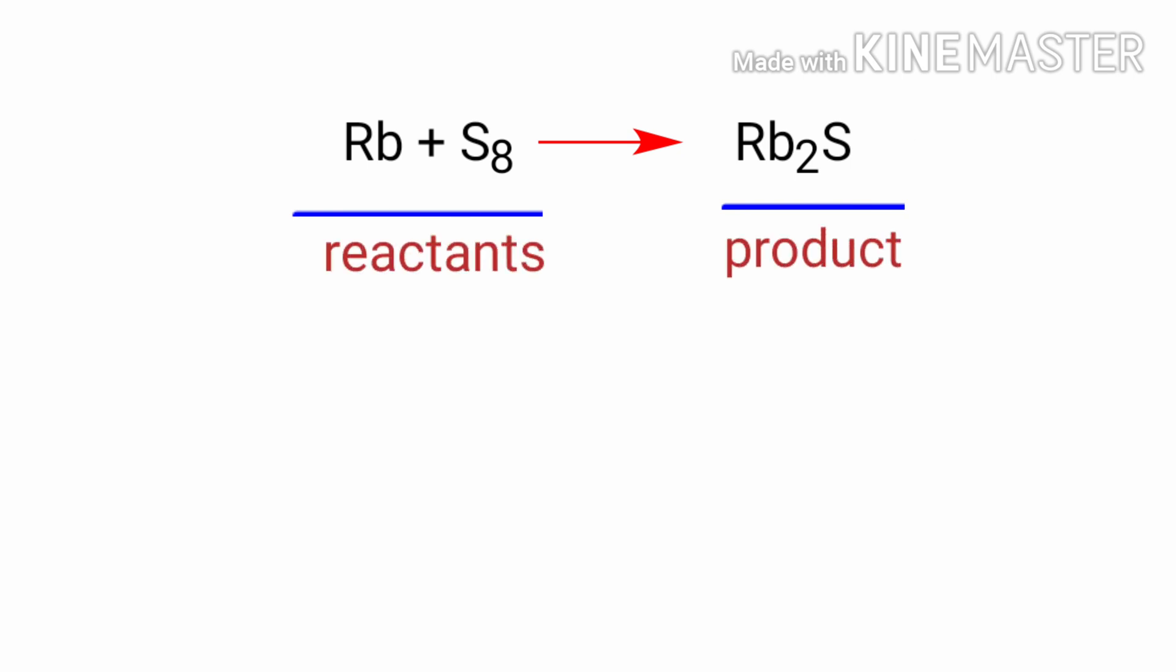In this equation the reactants are Rubidium and Octasulfur and the product is Rubidium Sulphide. If you look at this equation, the equation is not balanced.